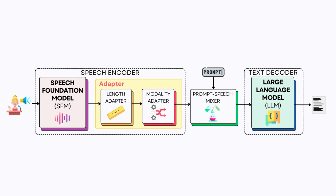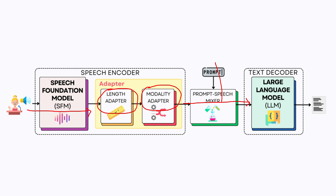Putting everything together in one picture: the speech input first goes through the speech foundation model, or speech encoder. The length adapter converts a sequence of speech vectors into a shorter sequence. The modality adapter converts speech vectors into an input for the LLM — this piece is optional and is often just a single feedforward layer. Finally, a prompt is concatenated with the sequence together to produce the input for the LLM, and then we run the LLM generation procedure normally to produce the output.